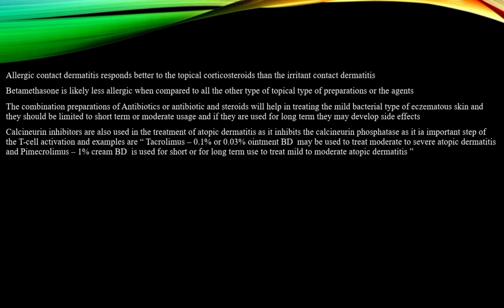Calcineurin inhibitors are used in atopic dermatitis treatment. They inhibit calcineurin phosphatase, thereby preventing T-cell activation. Examples include tacrolimus 0.1% or 0.03% ointment applied twice daily for moderate to severe atopic dermatitis, and pimecrolimus 1% cream BD for mild to moderate atopic dermatitis. These can be used on all body parts without causing corticosteroid adverse effects.